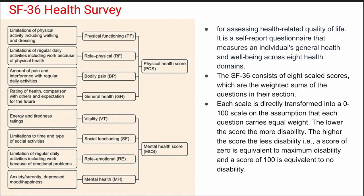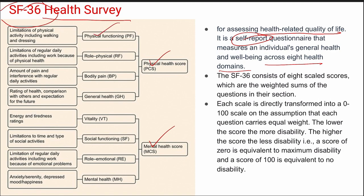First on the list is SF-36 Health Survey. This is used for assessing the health-related quality of life and it is a self-reported questionnaire. It measures an individual's general health and well-being across eight health domains, broadly divided into physical and mental health. Under physical, we have physical functioning, role of physical functioning, bodily pain, and general health. Under mental health, we have vitality, social functioning, role emotional, and mental health.